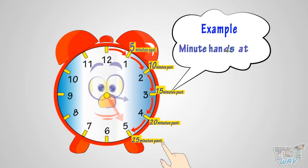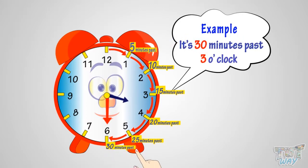Here the minute hand is at 6, so it's 30 minutes past 3. We call that half past 3.